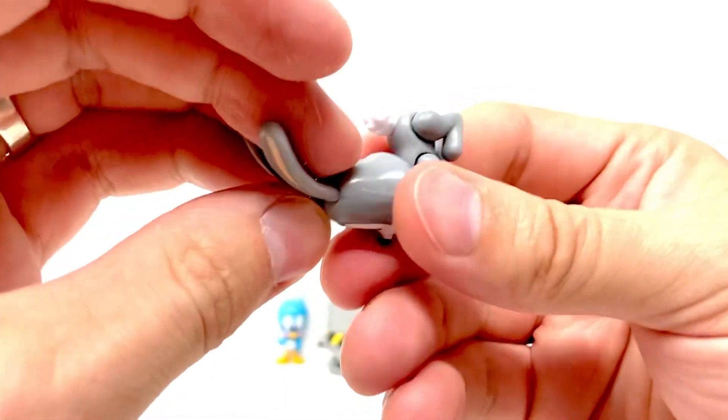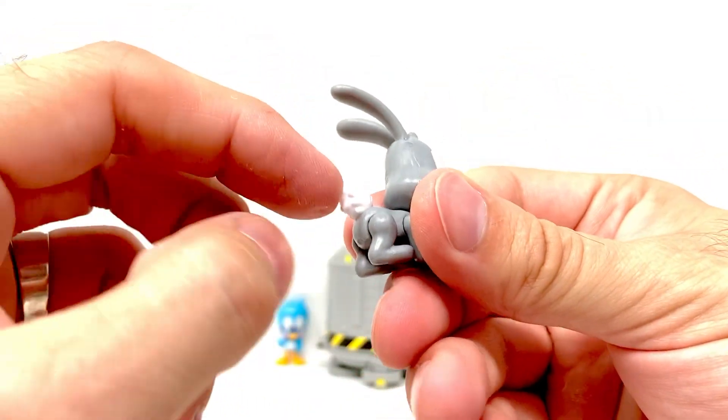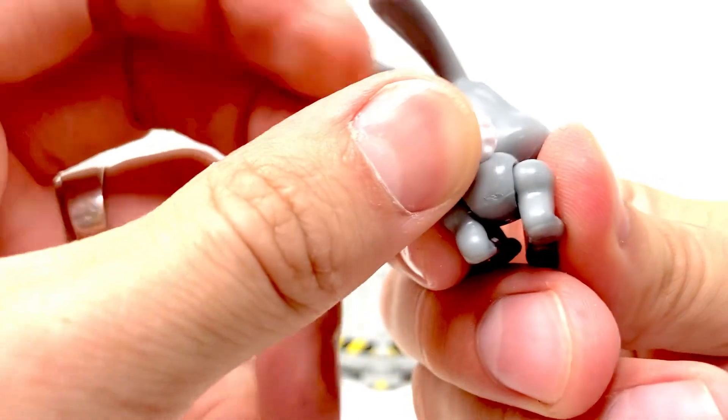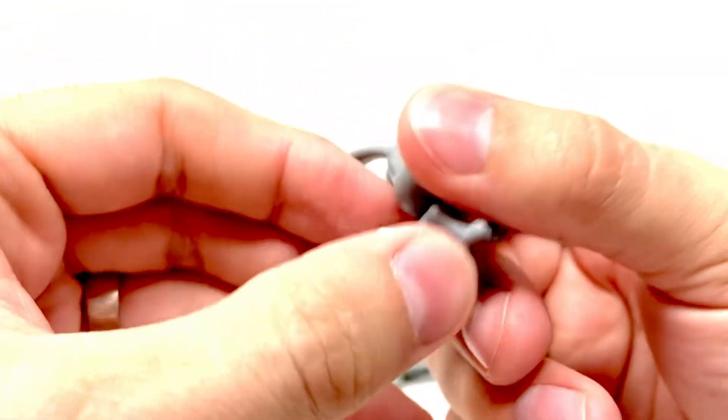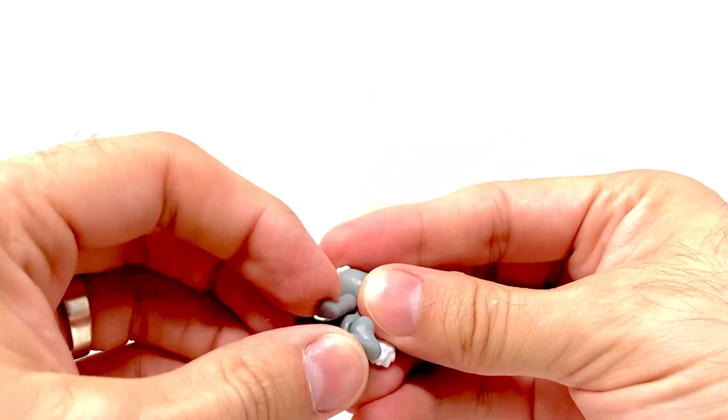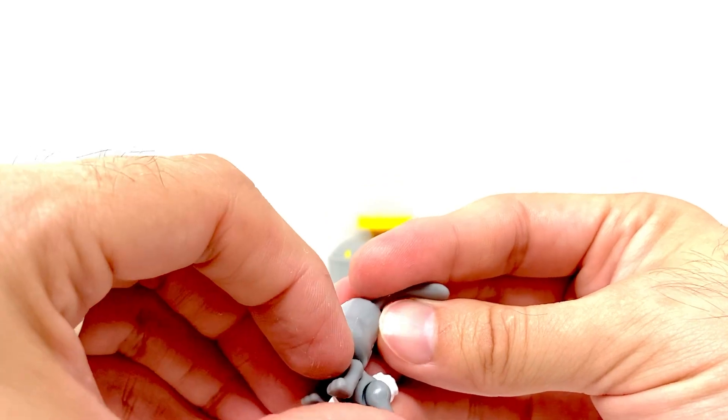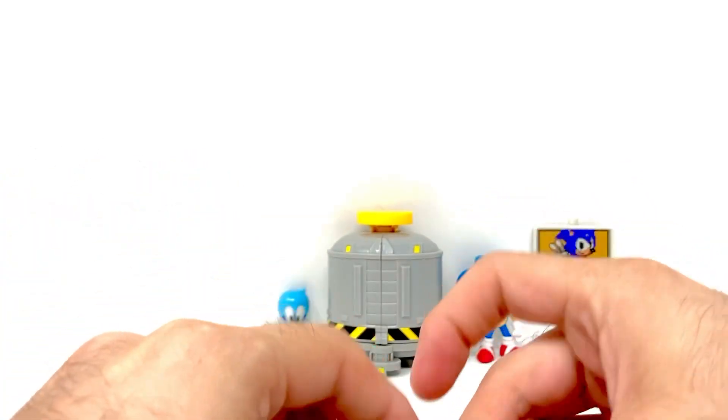And it can rotate all the way around. The tail is a separate piece of plastic but it does not move. It's just glued into place there. The hind legs move as do the front legs.